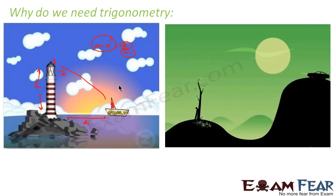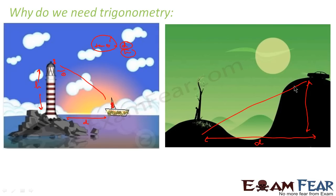Here is another example. Suppose you are standing behind a tree on a small mountain and someone is approaching in a car. You want to know how far the car is from you. You can find this distance if you know the height of the mountain — since you stay in the area, you know the height well. And if you know the angle by looking at the car, you can find distance d using the formula: tan theta equals h divided by d. Knowing theta and h, we can find d.